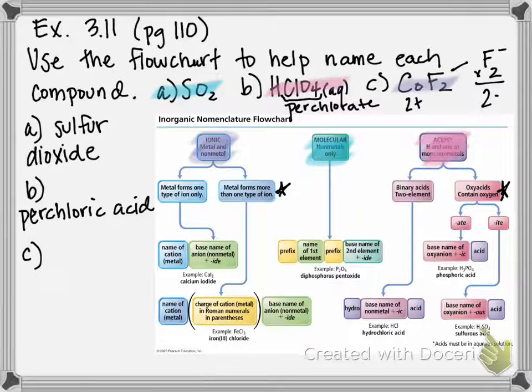So to name this, it's going to be cobalt, parenthesis ii, roman numeral for two. And then fluorine, since it exists as an ion, becomes fluoride.